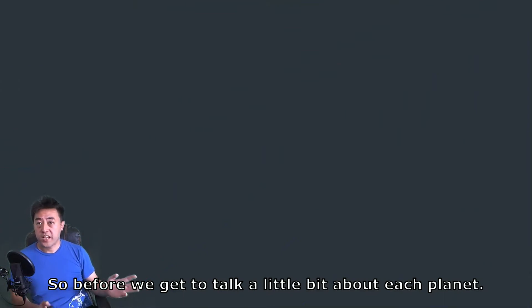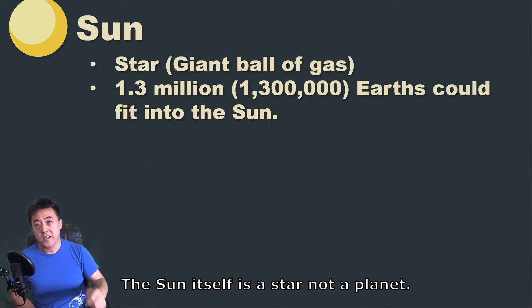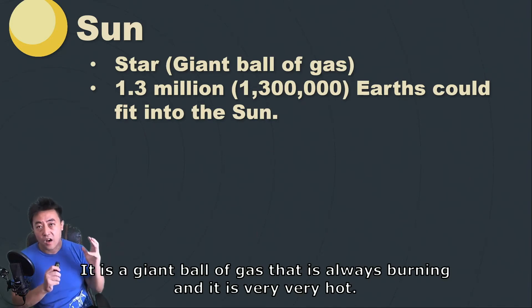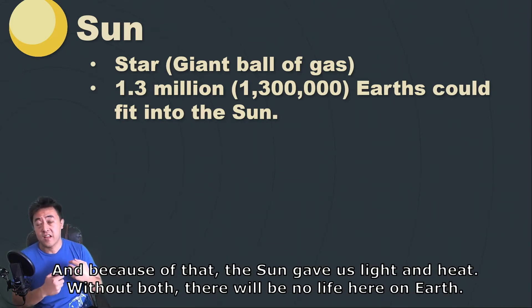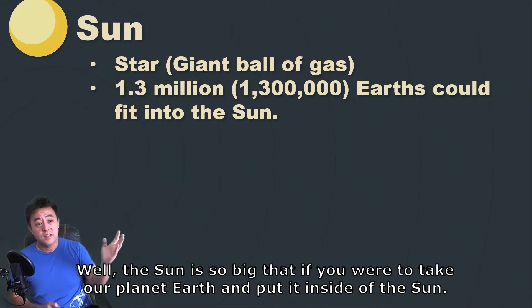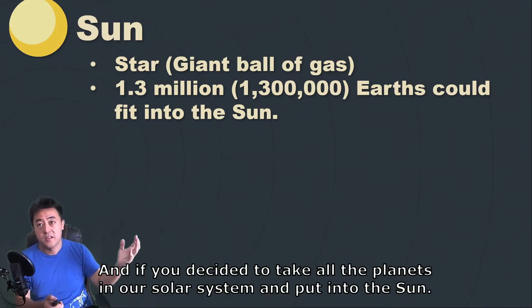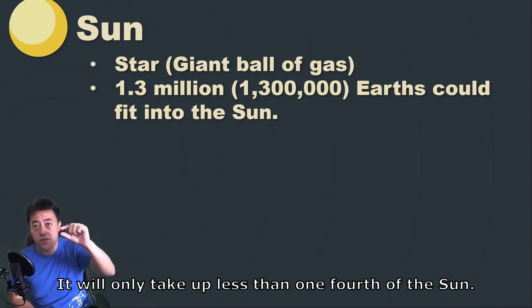Before we talk about each planet, let's start with the sun first. The sun itself is a star, not a planet. It's a giant ball of gas that is always burning, and it's very, very hot. Because of that, the sun gives us light and heat. Without both, there will be no life here on Earth. The sun is so big that if you put our planet Earth inside the sun, you could fit about 1.3 million Earths into the sun. And if you took all the planets in our solar system and put them into the sun, it would only take up less than one-fourth of the sun.